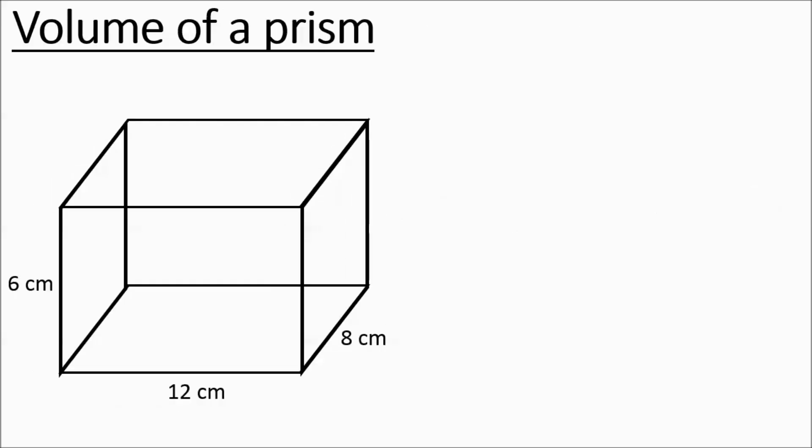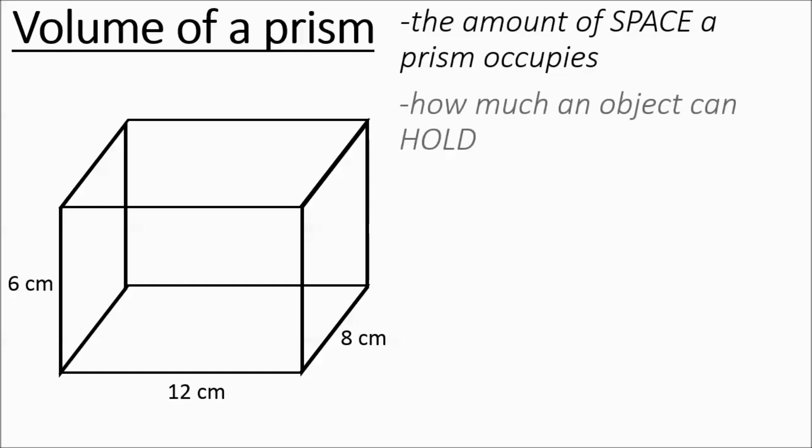So to find volume, this one's pretty easy. Volume is the amount of space something occupies. It can be considered how much something can hold, and it's going to be length times width times height. Volume equals LWH, length times width times height.